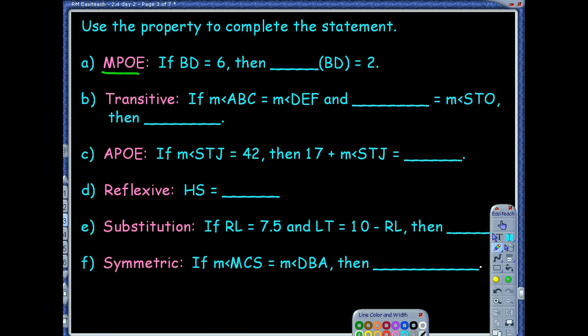So the if part is what you're starting with, and your conclusion, your then part, is kind of what follows after, and we're going to try to figure out what will make this true. Starting with MPOE, what does MPOE basically mean? It means I'm using the multiplication property of equality. So I'm multiplying something to both sides of my equation. So this is the equation you're basically starting with. So the question is, what am I multiplying to each side to make this true?